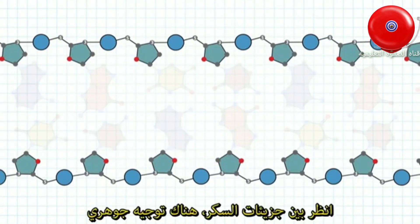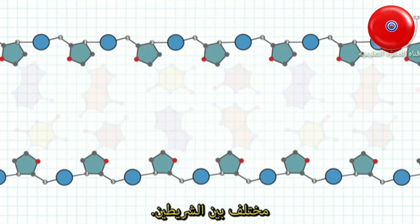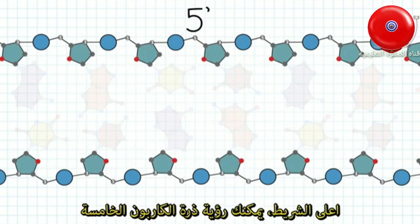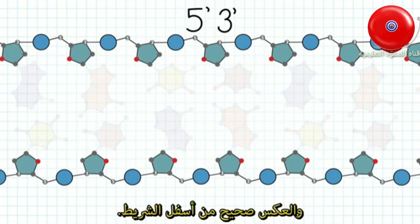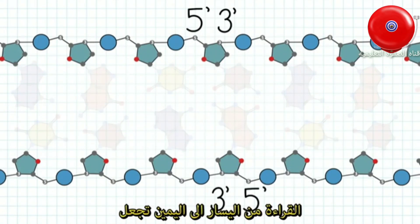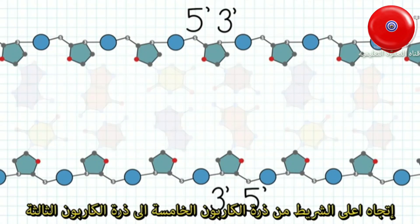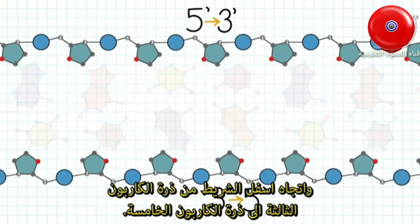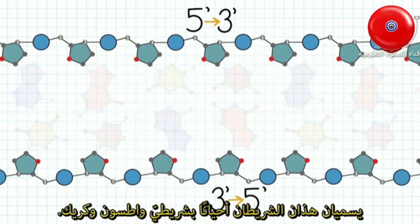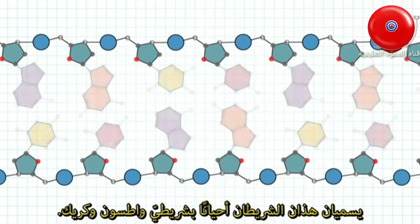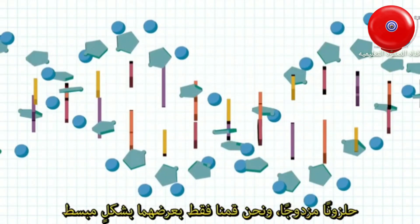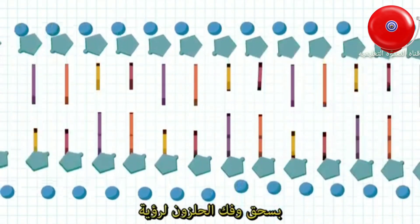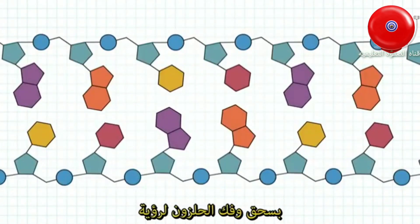Looking within the sugars, there is an intrinsic orientation difference between the two strands. On the top strand, you can see that the 5' carbon of each sugar is on the left, and the 3' carbon is on the right. The opposite is true for the bottom strand. Reading left to right, that makes the top strand orientation 5' to 3', and the bottom strand orientation 3' to 5'. These strands are also sometimes called Watson and Crick. Keep in mind that this double-stranded DNA is still a double helix, and we have simplified the representation by flattening and unwinding the helix here to better see the atomic structure.